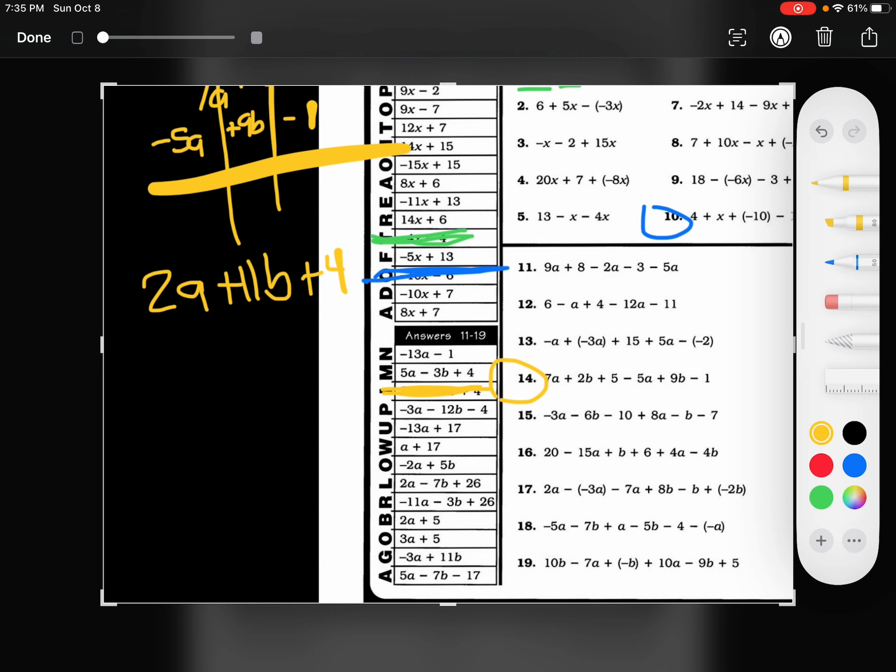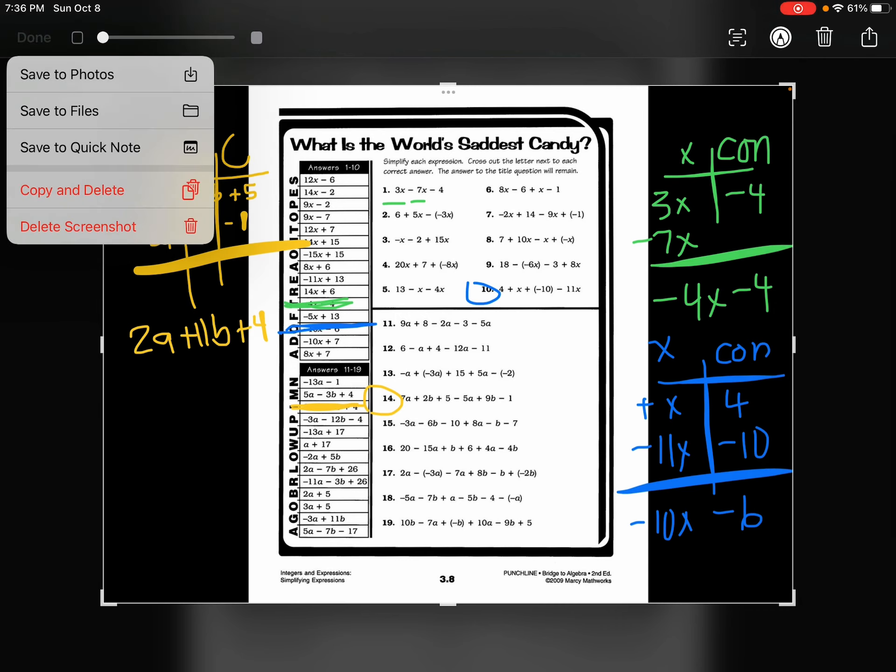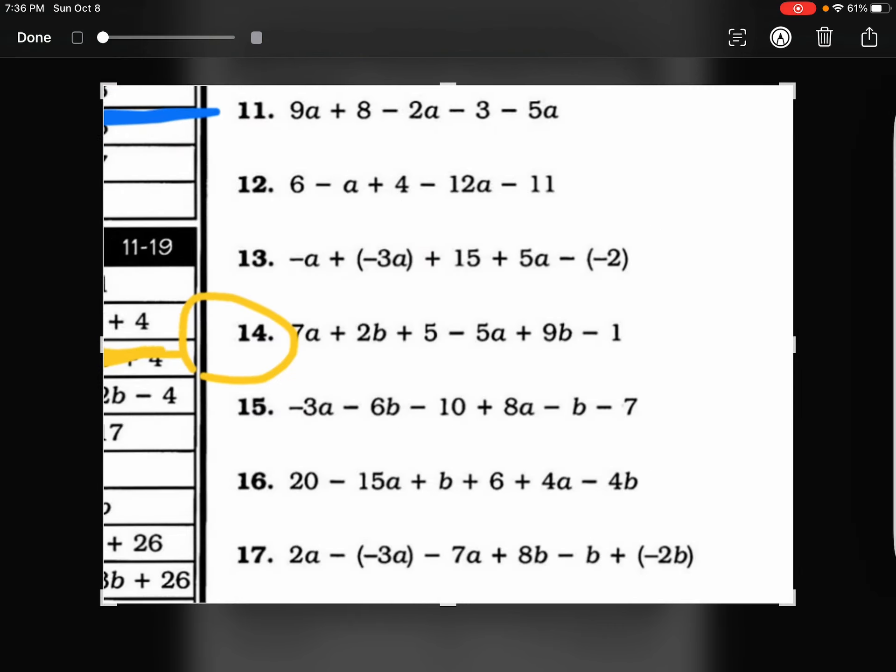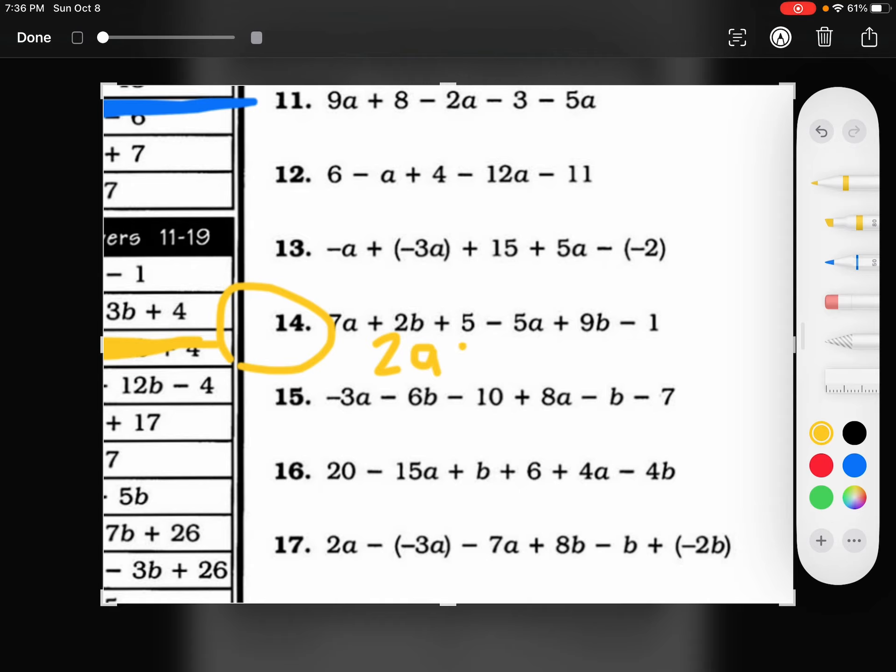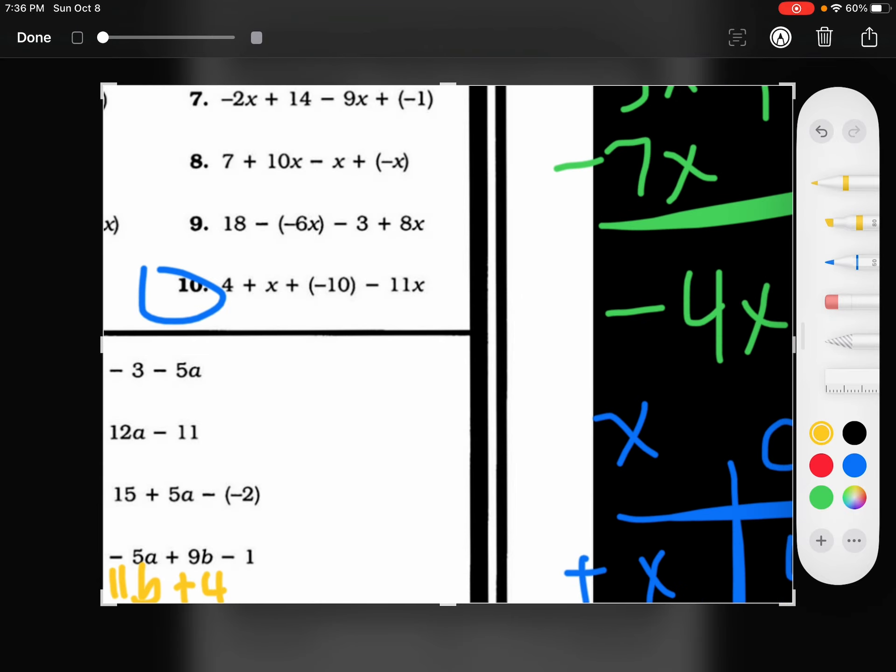For every one of these questions, that's what you're going to be doing for combining like terms. My advice would be to use a whiteboard and make yourself a bunch of tables and work those things out. You need to make sure that you write your answer underneath each one. So this one says 2a plus 11b plus 4.